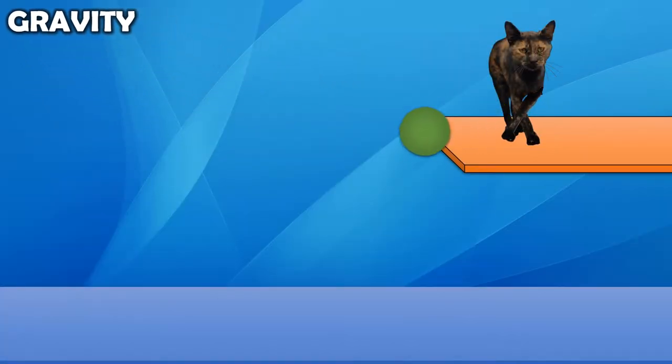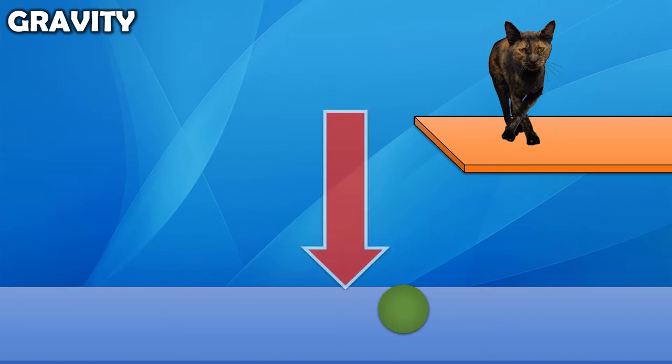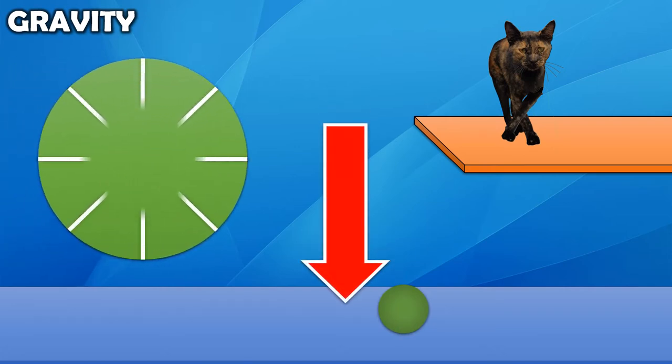When a ball is dropped from a height, the traditional understanding of gravity according to a globe Earth model is that a pull from the centre of the Earth is what drags the ball to the floor.